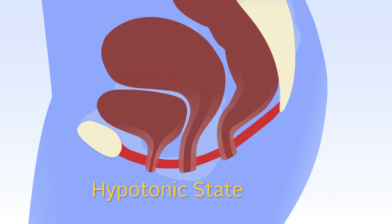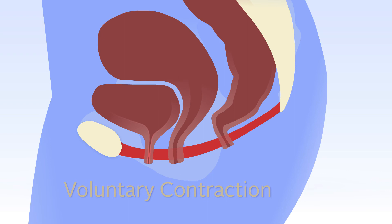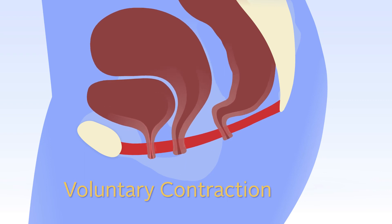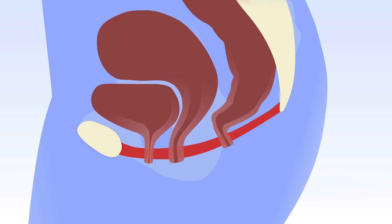If the pelvic floor muscle is hypotonic, the contractile activity and/or passive stiffness are decreased. Muscle function such as power, endurance, and relaxation may also be impaired. This may cause symptoms such as urinary and anal incontinence, pelvic organ prolapse, or sexual dysfunctions.